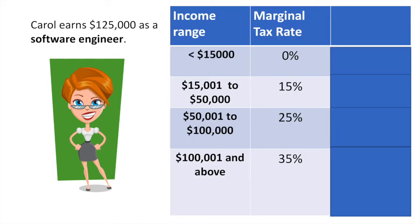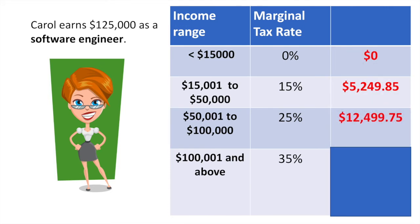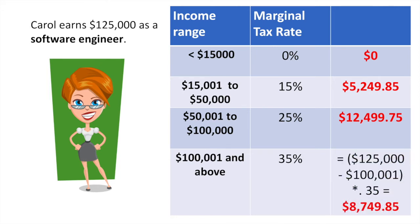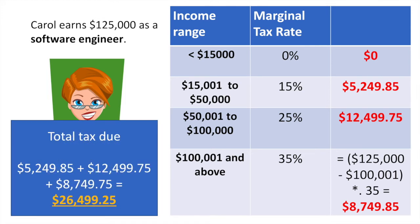Carol earns $125,000. At the first rate of tax she pays nothing. At the second and third levels we can just add the quick calculation figures. However, at the 35% bracket we need to calculate her tax owed — 35% of the amount over $100,001 is equal to approximately $8,749.75. When we add that all together, her total tax owed is $26,499.25.